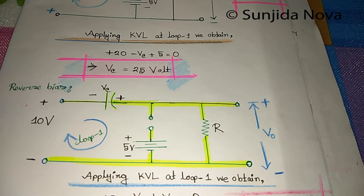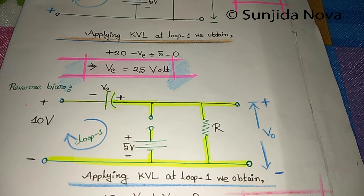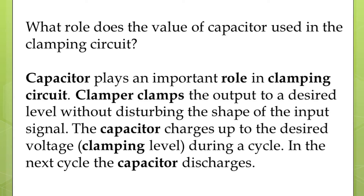The value of the capacitor used in the clamping circuit plays an important role. The capacitor clamps the output to a desired level without disturbing the shape of the input signal. The capacitor charges up to the desired voltage — that means the clamping level — during a cycle, and in the next cycle the capacitor discharges.